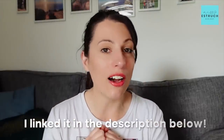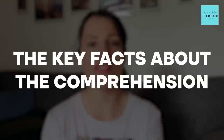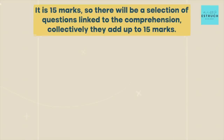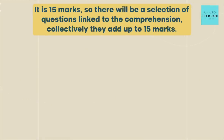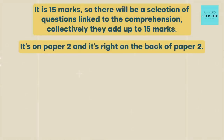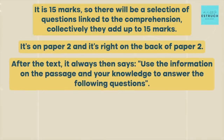Let's get into the key facts about the comprehension. Number one: it is 15 marks — there'll be a selection of questions linked to the comprehension that collectively add up to 15 marks. It's on Paper 2, right at the back, after the text.